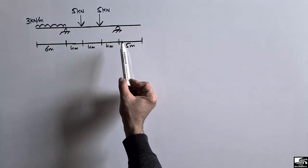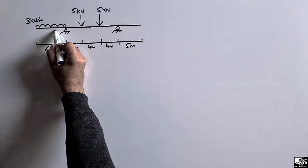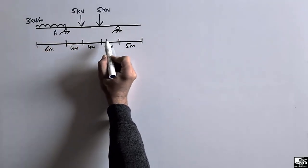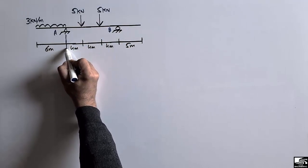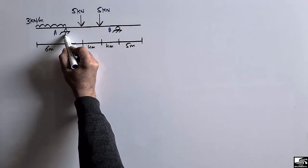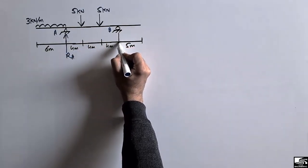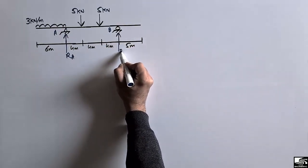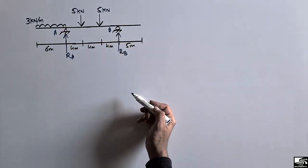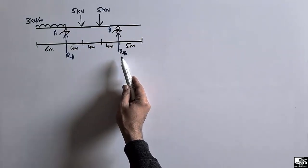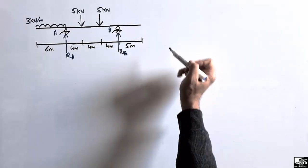First, to find out the support reactions, let's consider this is support A and this is support B. They will have upward resistance to the applied loads, so it will be R_A and R_B. Since there is no horizontal load, only upward reactions are present.